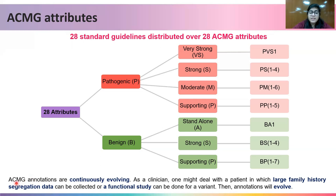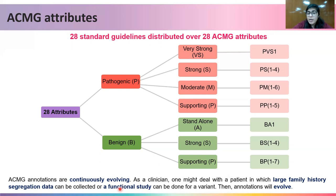One important point to remember is that ACMG annotations are continuously evolving. As a clinician, you might deal with a patient in which large family segregation data can be collected or a functional study can be done for a variant. As the evidence grows, the annotations will also change.